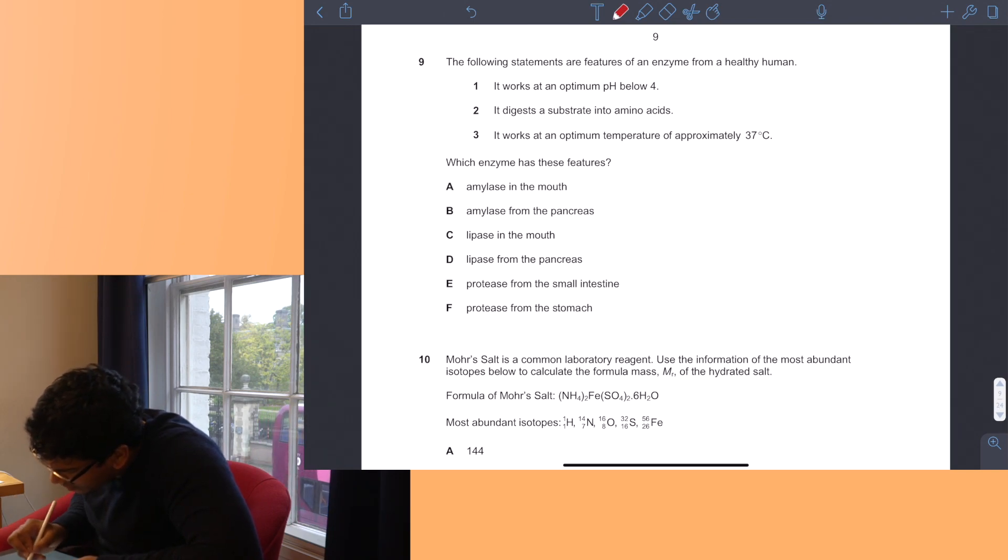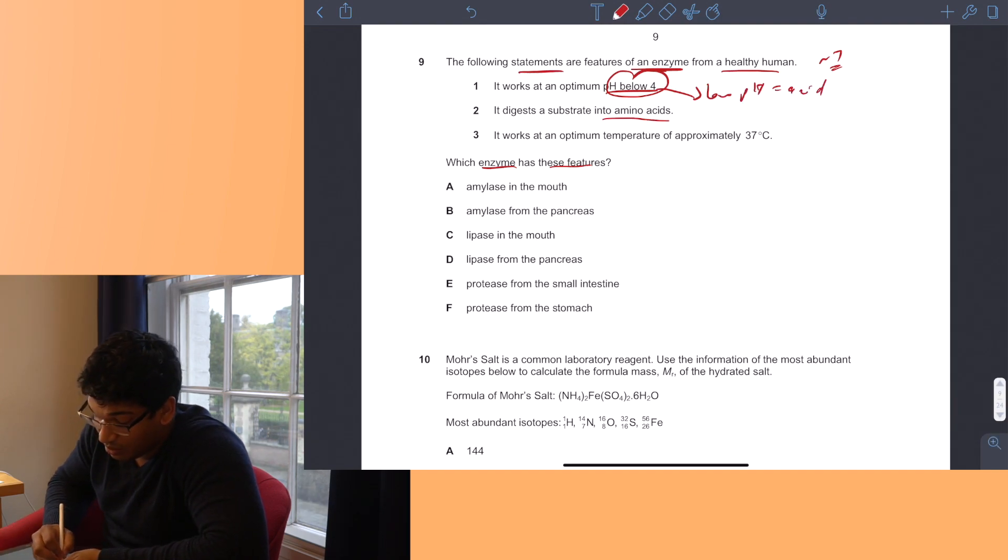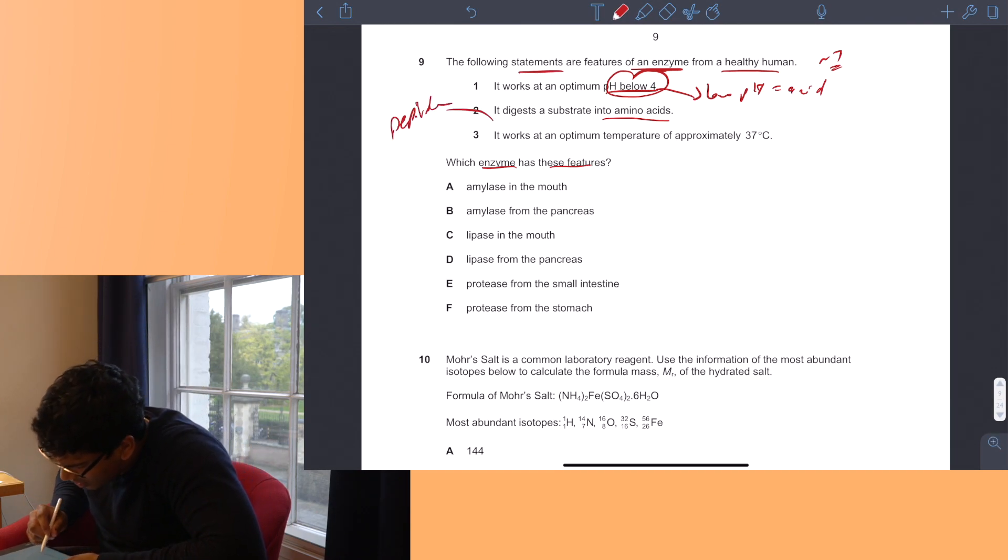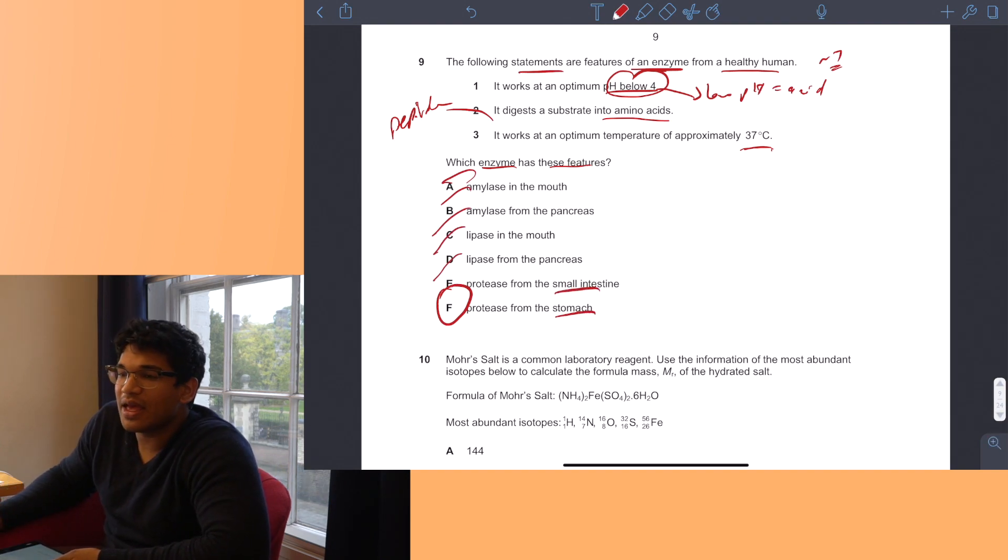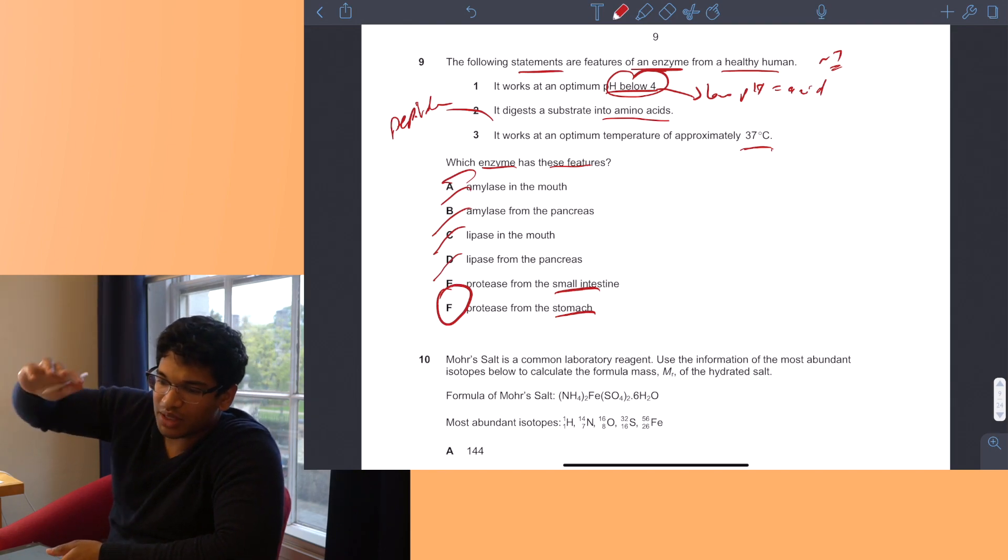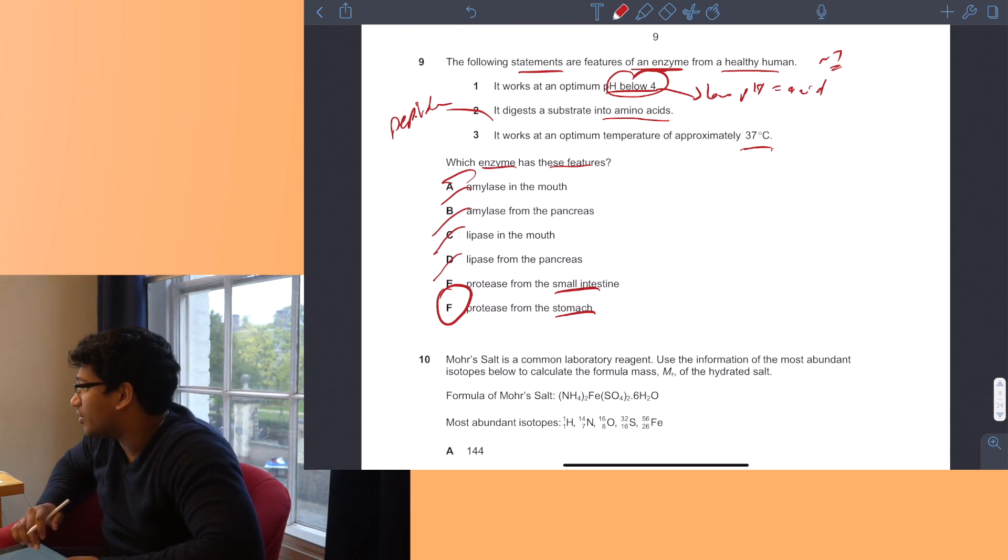Question 9. Which enzyme has these features: works at an optimum pH below 4, digests a substrate into amino acids, and works at an optimum temperature of around 37 degrees? Low pH means acid, so it must work in the stomach. We know that peptidase produces amino acids from proteins. It has to be a protease because it's producing amino acids. Between small intestine and stomach, it's working at a pH below 4. The stomach has acid which is low pH, whereas the small intestine has bile which is alkaline. So this enzyme won't work in the small intestine. It must be F, protease from the stomach.